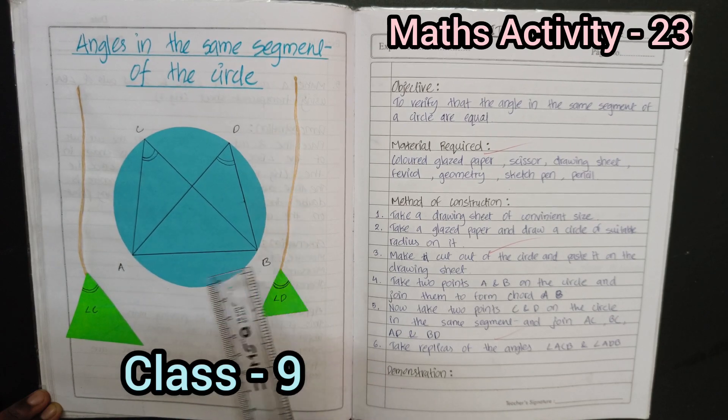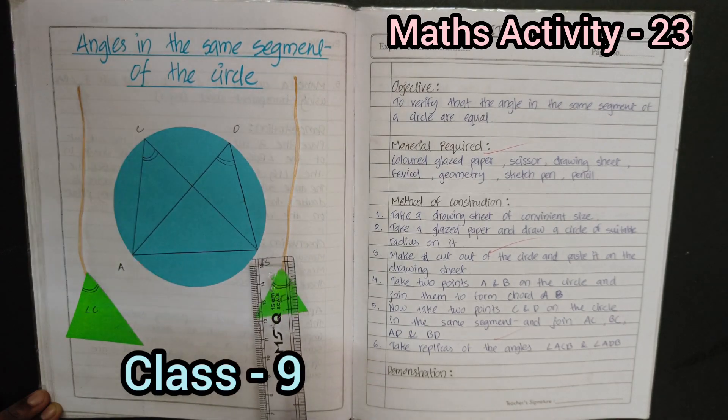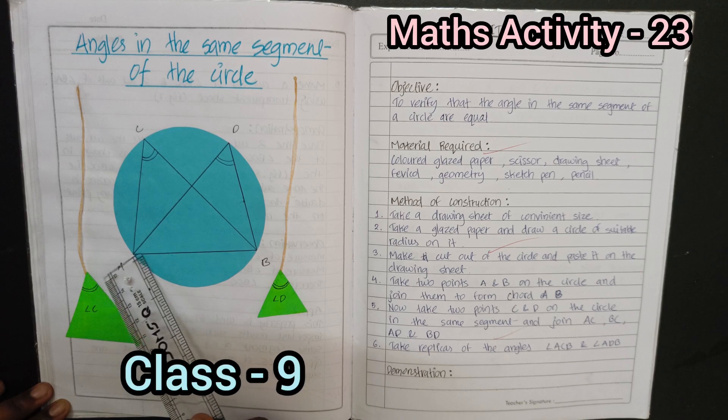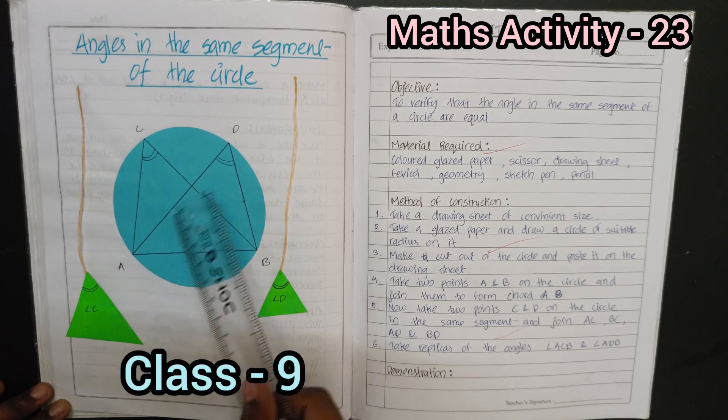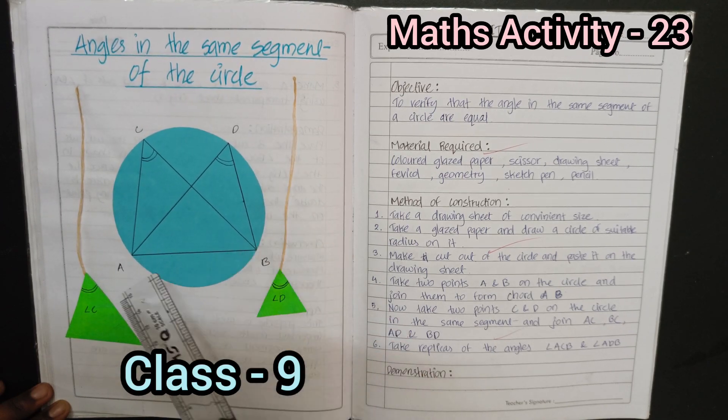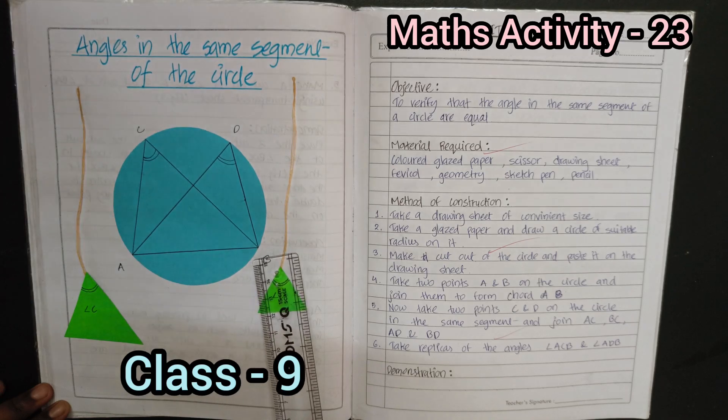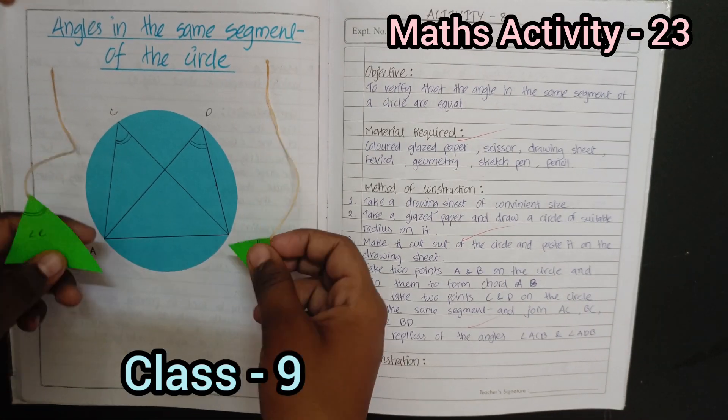Two angles on the same segment: angle ADB and angle ACB. This we will cut two angles of the same size.